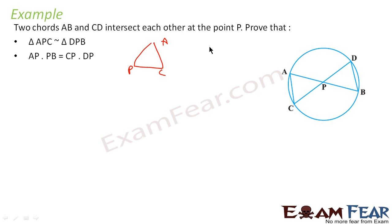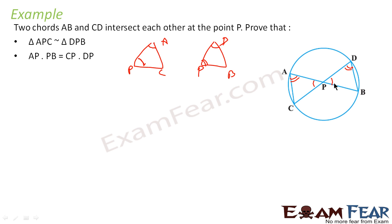Looking at triangles APC and DPB: this angle is equal to this angle — vertical opposite angles. Also, angle A is equal to angle D, because angles on the same arc BC from any point on the arc are equal. So both triangles are similar.